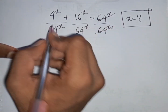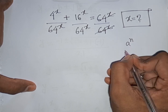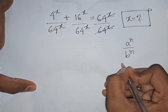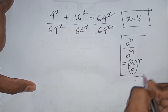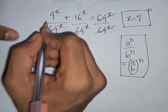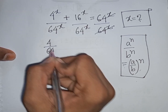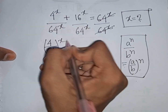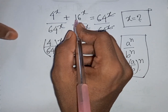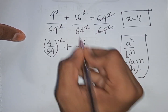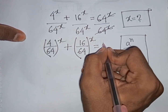The 64^x terms cancel. Now, since we have the same power x with different bases, we apply the formula: a^n divided by b^n equals (a/b)^n. So we can write (4/64)^x plus (16/64)^x equals 1.